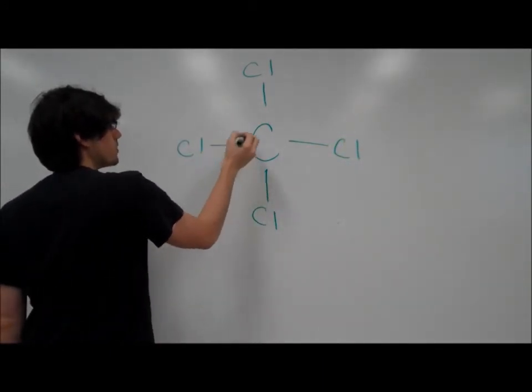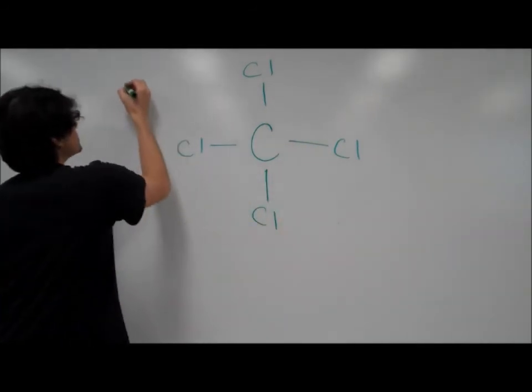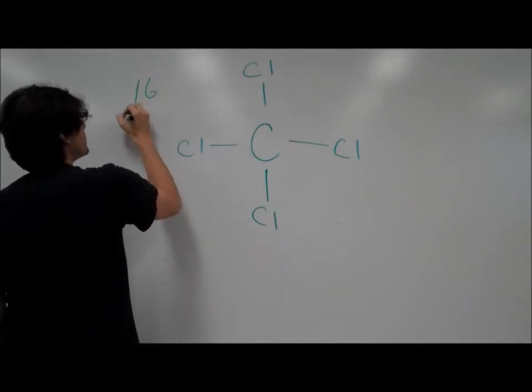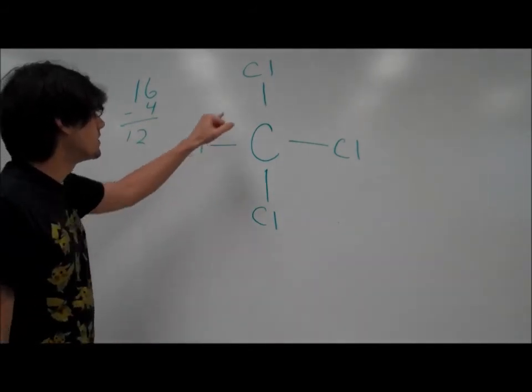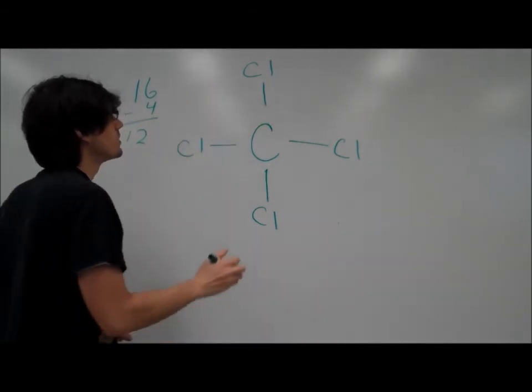We have used four bonding pairs, so subtract that from our 16, which will leave us with 12. We'll then begin filling the empty spaces around the chlorine.